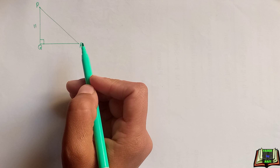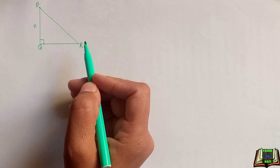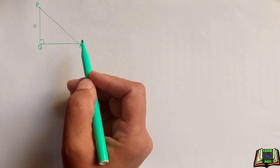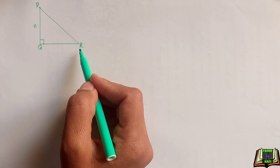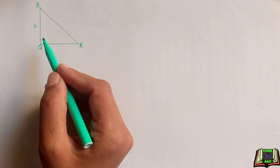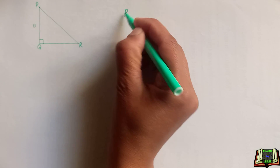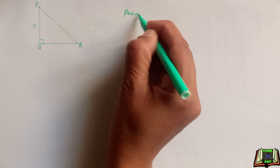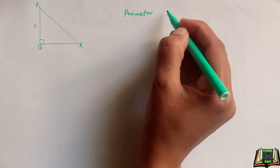Welcome back. Hope you are doing well. Today we have this trigonometry problem and in that we have a triangle. The triangle name is PQR and one side length of this triangle is given which is 11. We have to find out the perimeter of this triangle PQR.